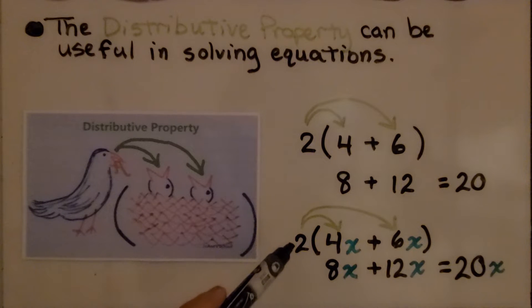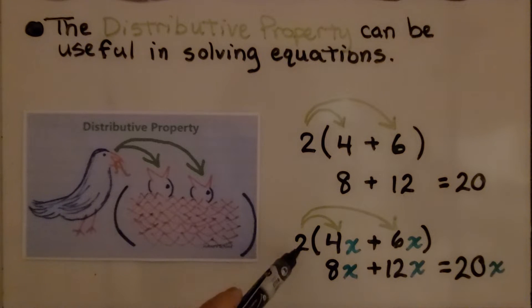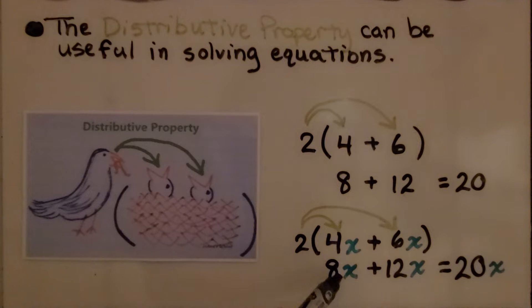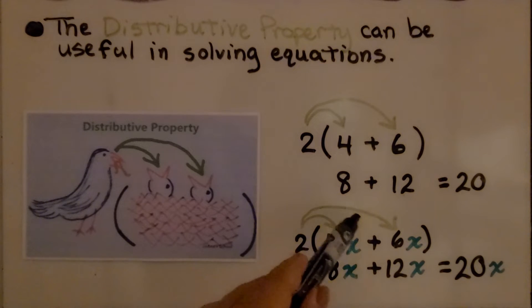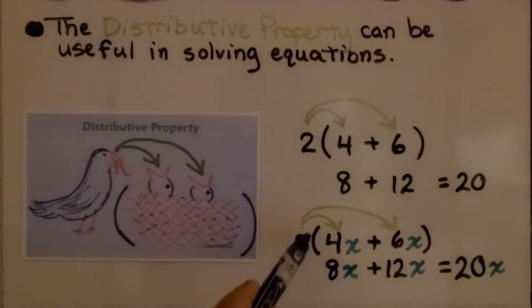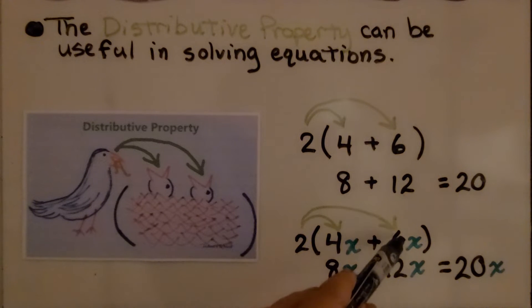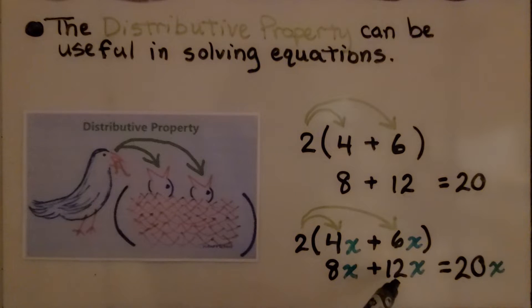Same thing if we had variables. We would have 2 times 4x, which is equal to 8x. And we would add it to 2 times 6x, which would be 12x. We add them together, we get 20x.